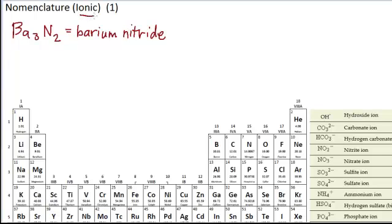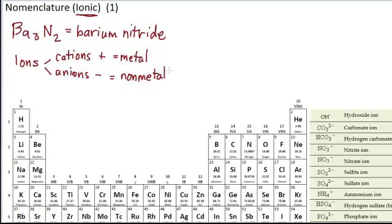Ionic compounds are made up of ions. You may recall that ions are either cations or anions. Cations are positively charged, anions are negatively charged. In an ionic compound, the cation is almost always a metal, and the anion is almost always a nonmetal. For example, the barium would be the cation here, and the nonmetal, nitrogen, would be the anion here, the negatively charged ion.